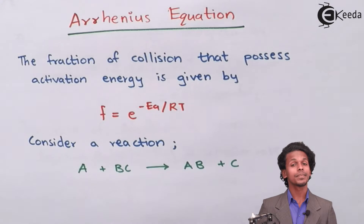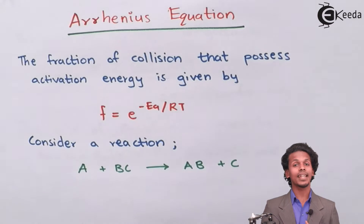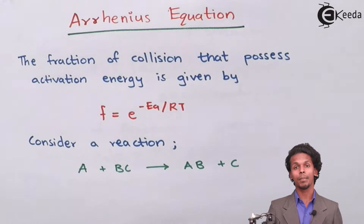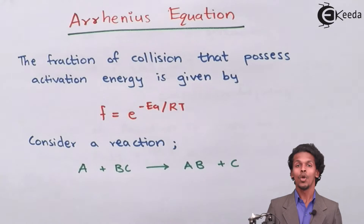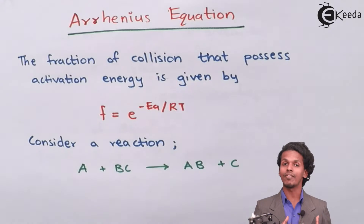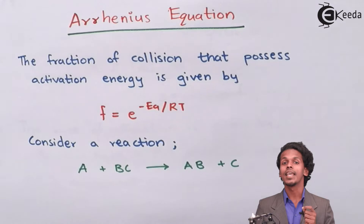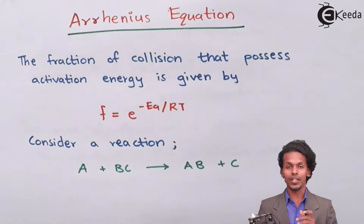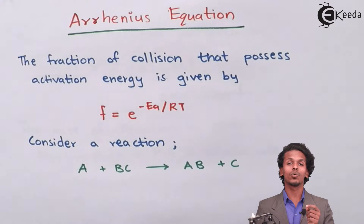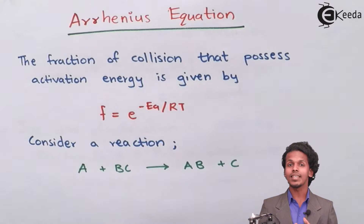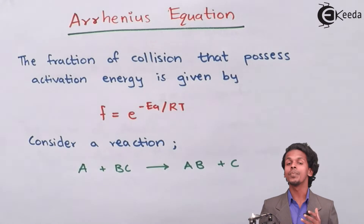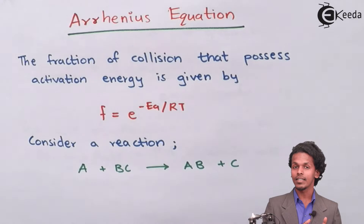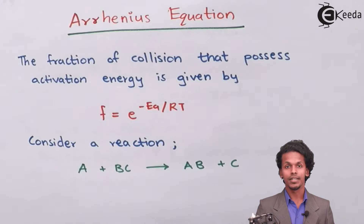For a reaction to occur, the reactive molecules will collide with each other. But it is not necessary that all the reactants will collide with each other. Only a fraction of molecules will collide with proper orientation and will possess a particular energy of activation, and that will lead to the formation of product. Let us see what possibilities could lead a particular reactant to convert into a product.